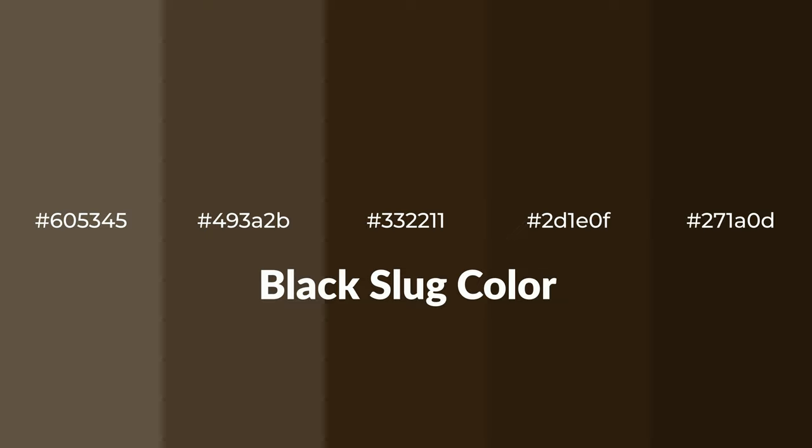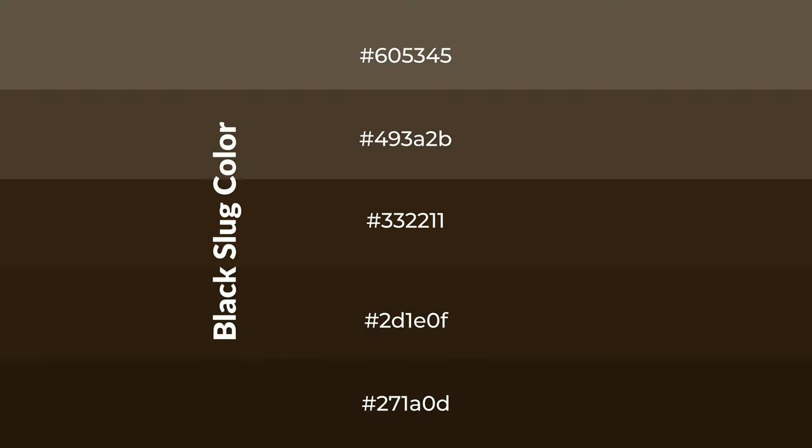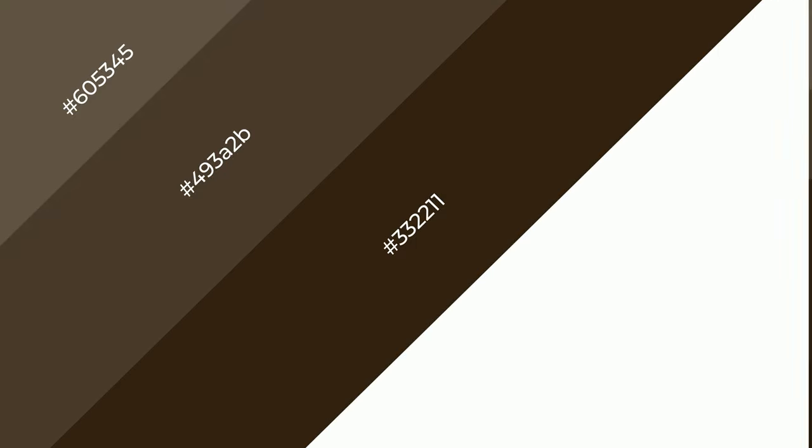Warm shades of black slug color with brown hue for your next project. To generate tints of a color, we add white to the color. Tints create light and exquisite emotions. To generate shades of a color, we add black to the color, and it is used in patterns, 3D effects, and layers. Shades create depth and drama.